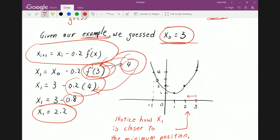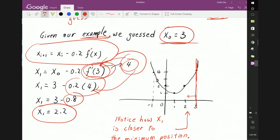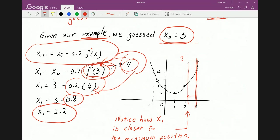So the derivative at 3 is equal to 4 and therefore we plug 4 in here. And this multiplied together becomes 0.8 and the result becomes 2.2. So this is our initial guess, 3. And now we move to 2.2. This way. Now remember, the actual solution is here. So we have inched closer to the actual solution.